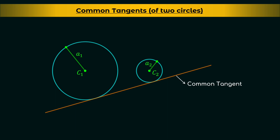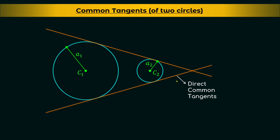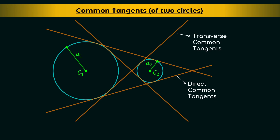For any two circles, there are two types of common tangents. The first are known as the direct common tangents — they touch both the circles on the same side. The others are known as the transverse common tangents — they touch both the circles on opposite sides.